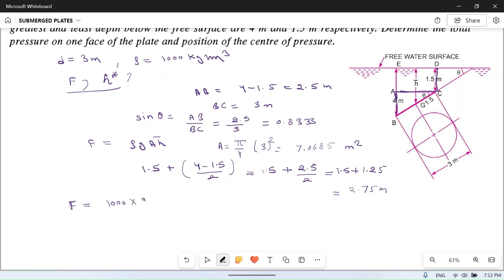Into area, which is 7.0685 meter square, into h bar, which is 2.75. If you calculate it, then you will get 190,621 newton approximately. So this is total pressure.